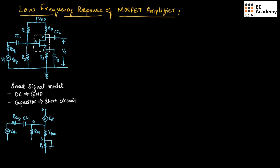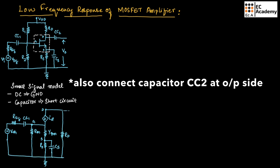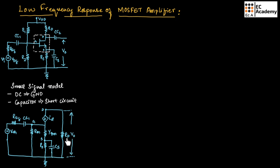At the source terminal we have resistor RS in parallel with capacitor CS. VDD, the DC voltage, is connected to ground and resistor RD is connected to ground at the output side. The output voltage is measured across resistor RD. This is the complete small signal model for the voltage divider bias circuit. From this small signal model we can identify three frequencies: low frequency at the input side, at the source terminal, and at the output side.